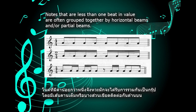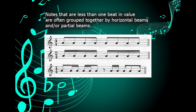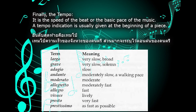Notes that are less than one beat in value are often grouped together by horizontal beams and partial beams. Finally, the tempo: it is the speed of the beat or the basic pace of the music. A tempo indication is usually given at the beginning of a piece.